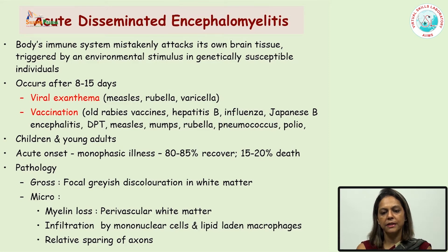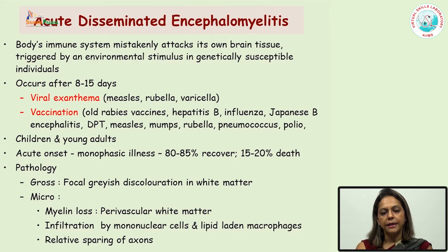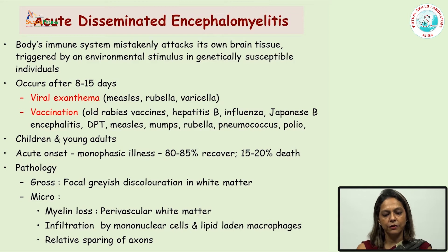It can occur after a viral fever like measles, rubella, or varicella infection, or it can be a post-vaccination illness. For example, a patient has been given an old rabies vaccine, hepatitis B vaccine, Japanese B encephalitis vaccine, DPT, measles, mumps, rubella, etc. The disease is mostly acute in onset and more than 85% of patients recover from their illness, and in 15 to 20% of cases there can be death of the patient.